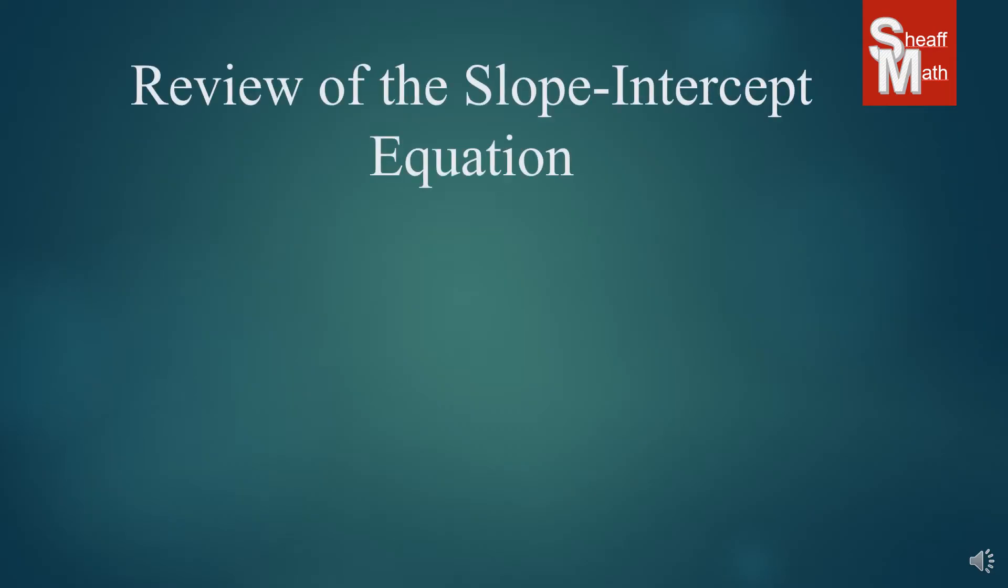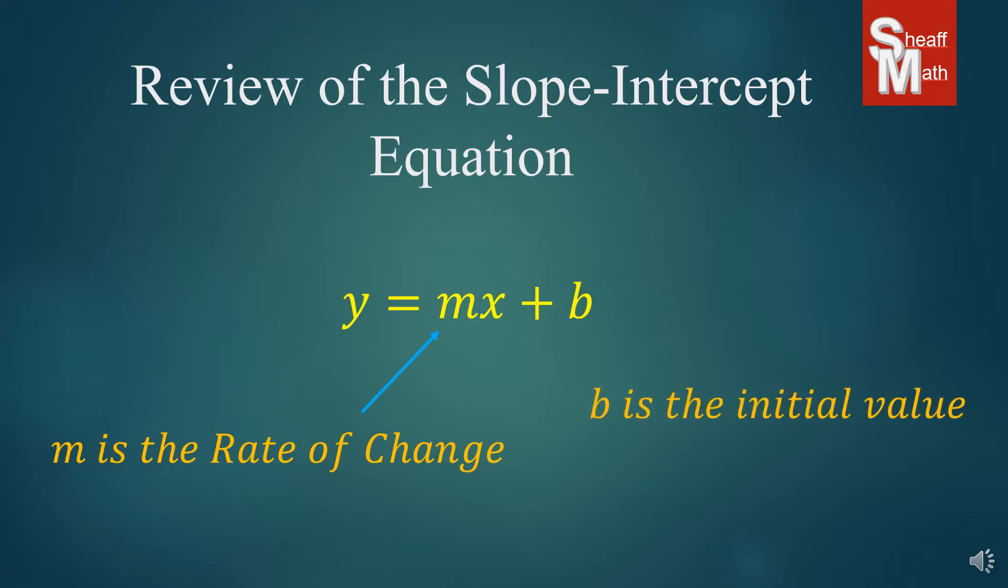So just a little review of slope-intercept equation. It's y equals mx plus b, and I'm sure that you have done work with the generic form of the slope-intercept. And so in this equation we have m which stands for the rate of change or the slope. It's how much it's going up or how much it's going down. And then we have the initial value or the y-intercept. And so this is the initial cost or initial term that you have at the very beginning.